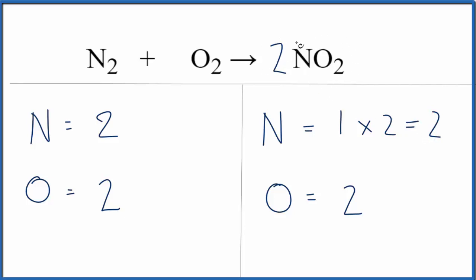But this 2 applies to the whole molecule, this whole NO2 molecule here. So we have 2 times 2. Now that gives us four oxygens, and our oxygens aren't balanced.